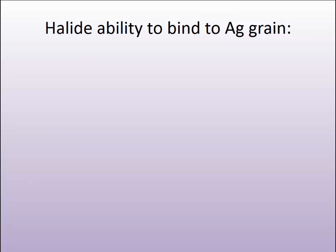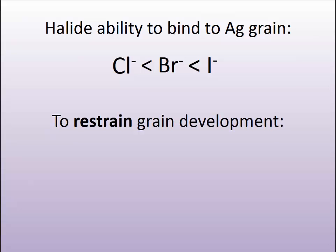The trend in binding to the surface of the grain goes as chloride being the weakest, then bromide, then iodine. We use this to our advantage. If I want to restrain the development of grains, we're going to do that with a chemical known as a chemical restrainer. A chemical restrainer is bromide ion.